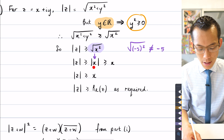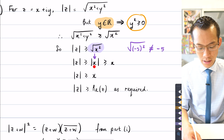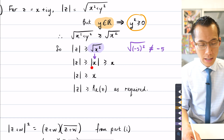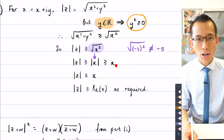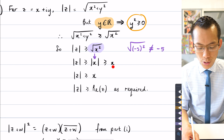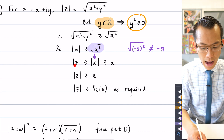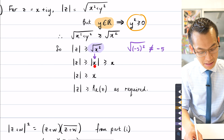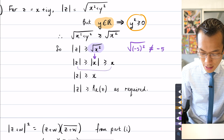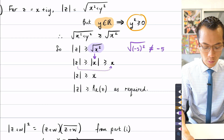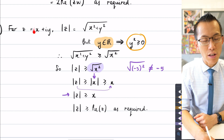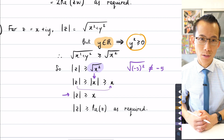Since |x| ≥ x always — if x is positive, |x| equals x, and if x is negative, |x| is larger than x — we can say |z| ≥ |x| ≥ x. Joining the dots: |z| ≥ x, and since x is by definition the real part of z, we get |z| ≥ Re(z), as required.